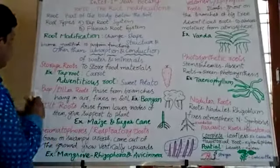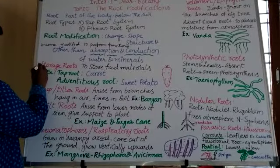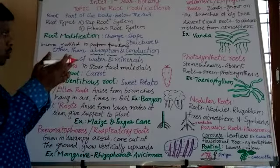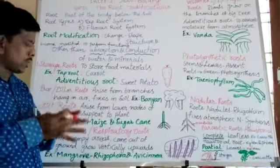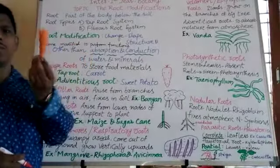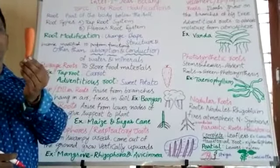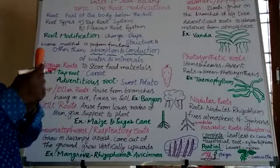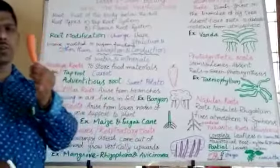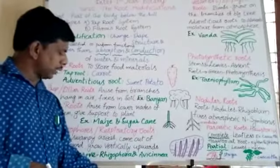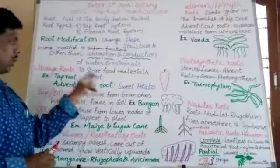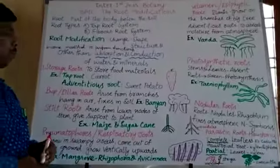Number one is storage roots. Storage roots means they store food materials in them. For example, carrot — this carrot stores food material in it. That is why these types of roots are known as storage roots. Adventitious roots are also there; for example, sweet potato.